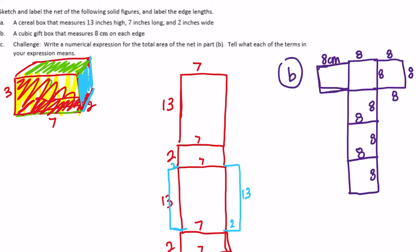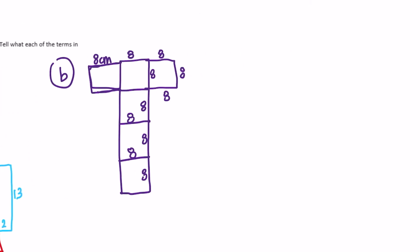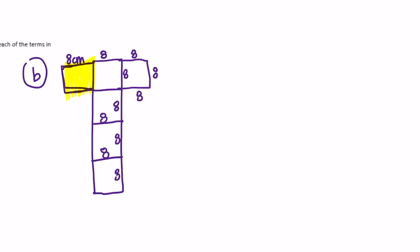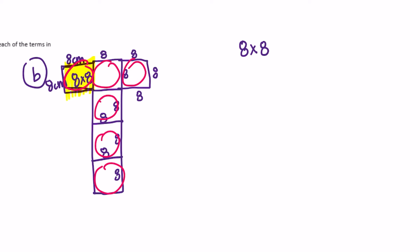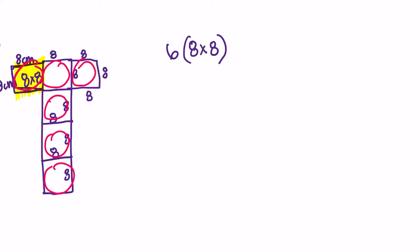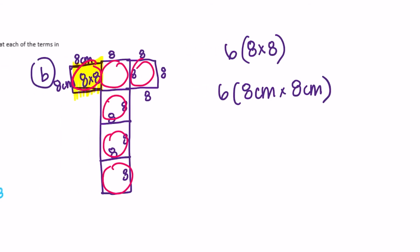Challenge: write a numerical expression for the total area of the net in part b and tell what each of the terms in your expression means. To find the area of just one face, it is 8 centimeters by 8 centimeters, so we do 8 times 8. We have 1, 2, 3, 4, 5, 6 different faces, so we multiply by 6. That expression is 6 times 8 times 8 centimeters, and that gives you the surface area of the entire cube.